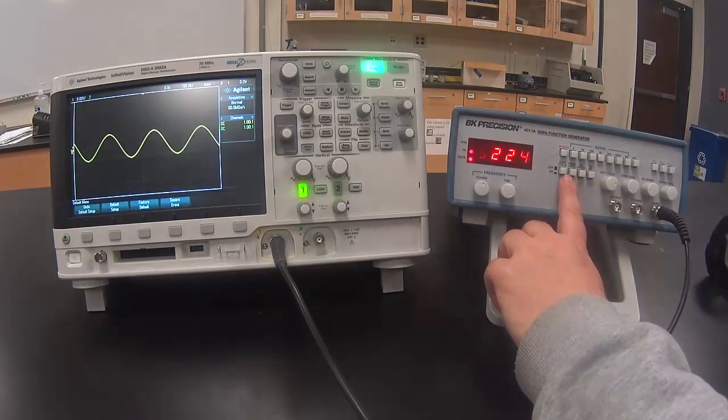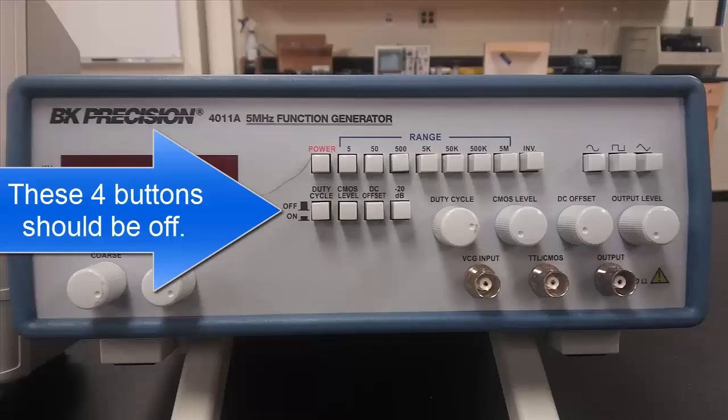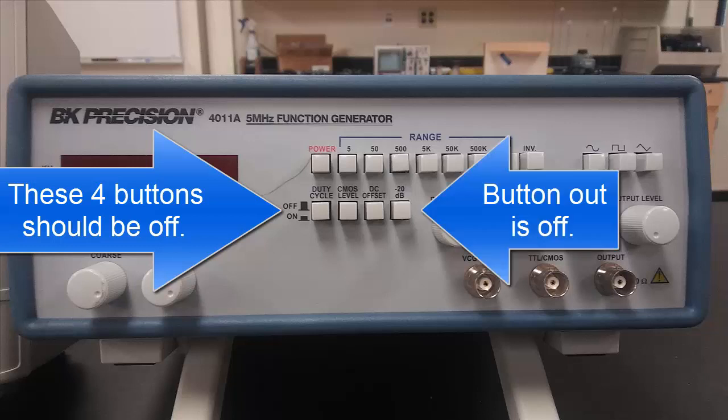There are four buttons on the function generator down here. For anything we are doing, they should just be in the off position. Off is out.